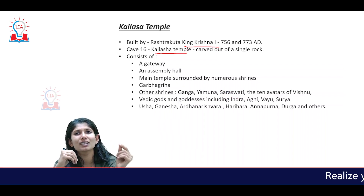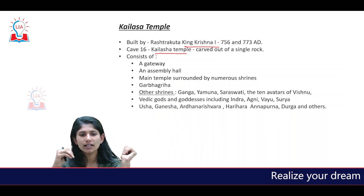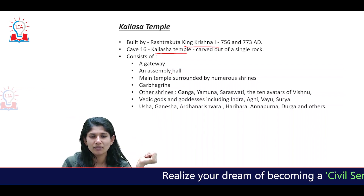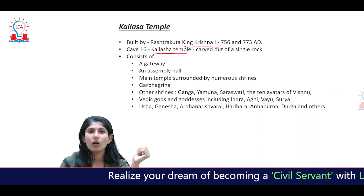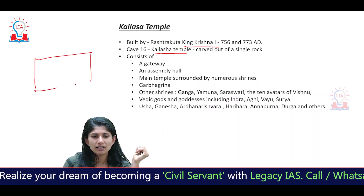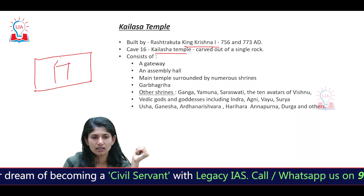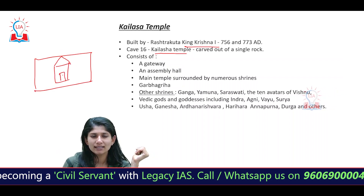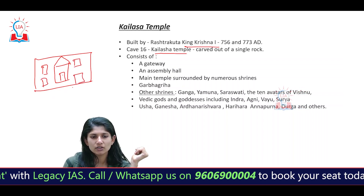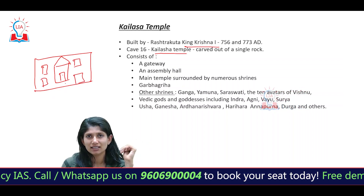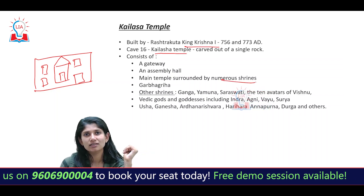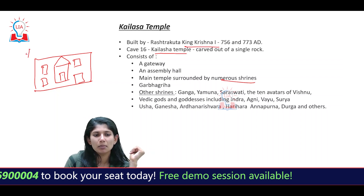It is carved out of a single rock. The temple consists of a gateway, an assembly hall, and — as we discussed with respect to Dravida architecture — a chief shrine which houses the main deity, along with multiple subsidiary shrines which hold other deities. A number of shrines are housed within the same temple complex.